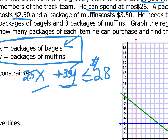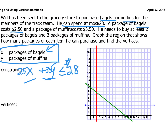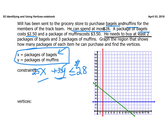Are there other equations? Yes — another constraint: he needs to buy at least two packages of bagels. At least two means greater than or equal to two: x is greater than or equal to 2. And then at least three packages of muffins: y is greater than or equal to 3. So now we have three equations.